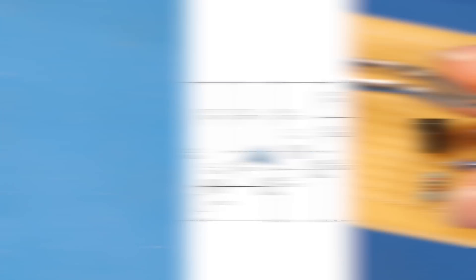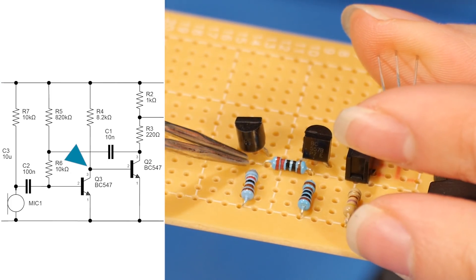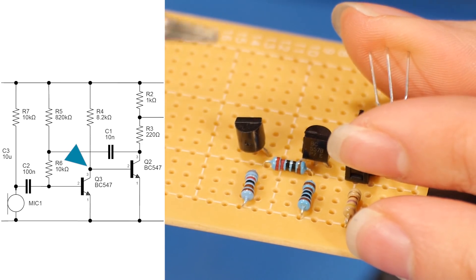For Q3, we need to have the collector connect to the base, which is pin two, of Q2. Also, if you look at the base connection for Q3, there are two resistors that go up from the base all the way up to that power plane.